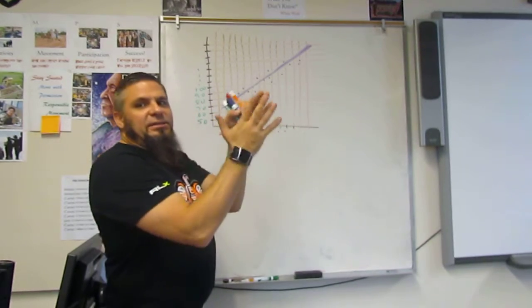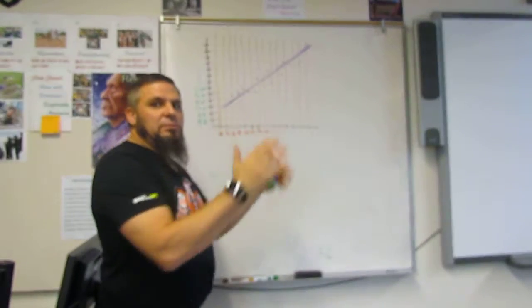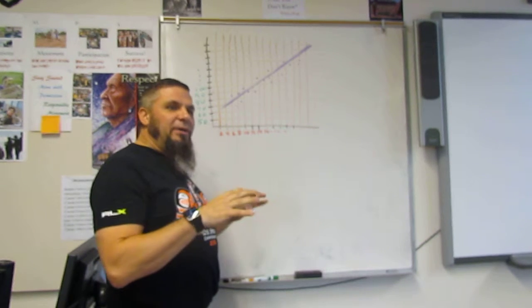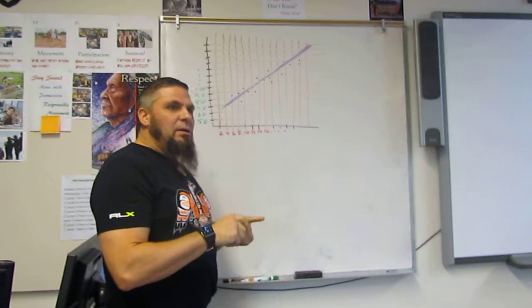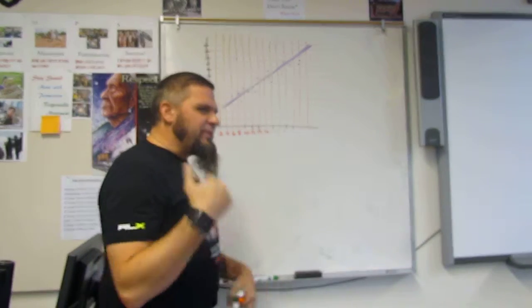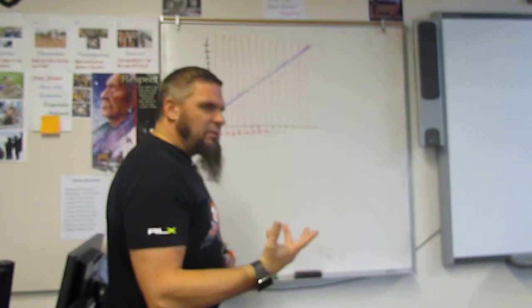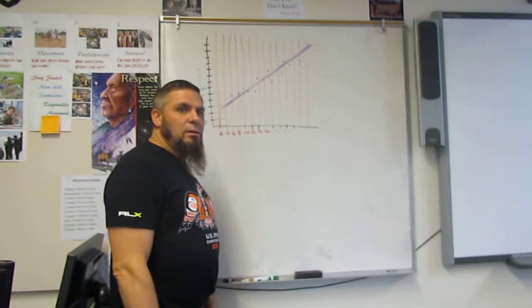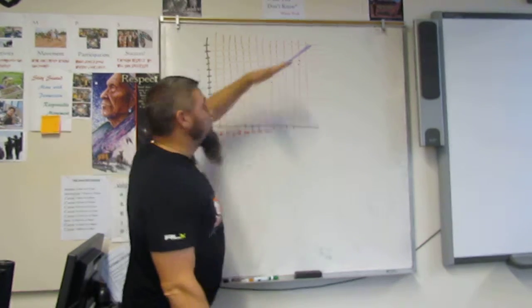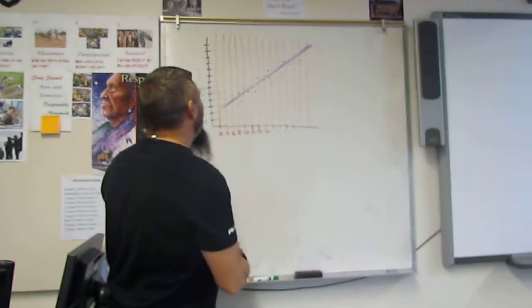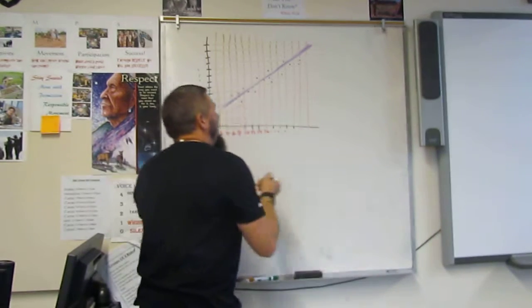How close are these dots to the line? Do they create a line? No, they're a little bit off the line. So remember, the R value depends on what the correlation is. Is this a positive correlation or a negative, first of all? Positive. Why? Because the slope is positive, because it's going up from left to right. So it's a positive correlation.